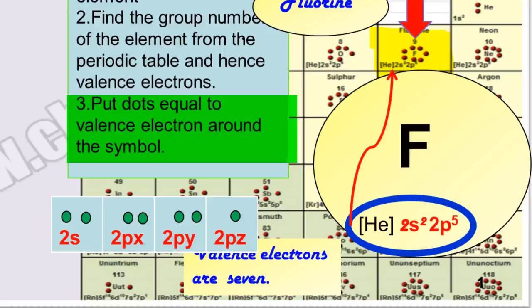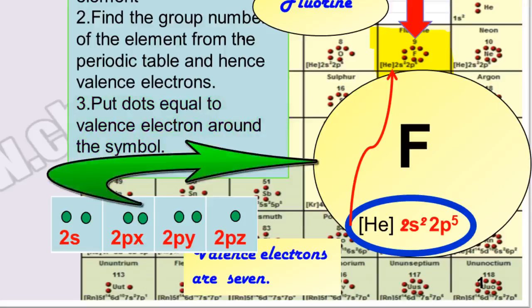Now in the third step we are going to put dots around the symbol of the element to represent its valence electrons. So seven valence electrons are going to be placed exactly the way they are present in the electronic configuration.